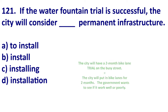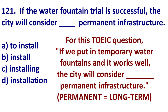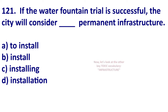So going back to this TOEIC question, we can understand the sentence: if we put in temporary water fountains and it works well, the city will consider blank permanent infrastructure. And of course, permanent means long term or forever, but not usually forever.